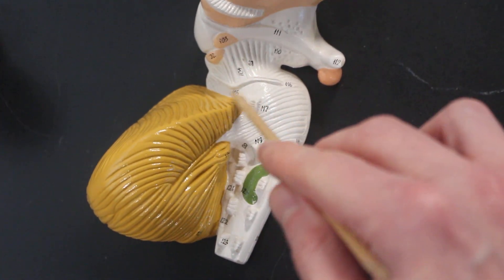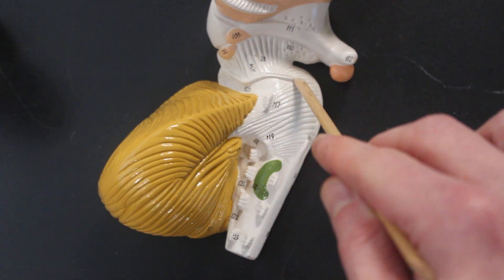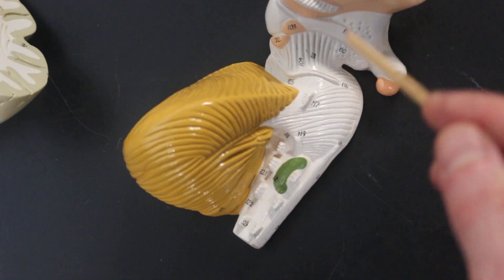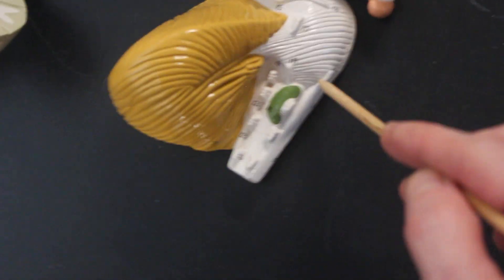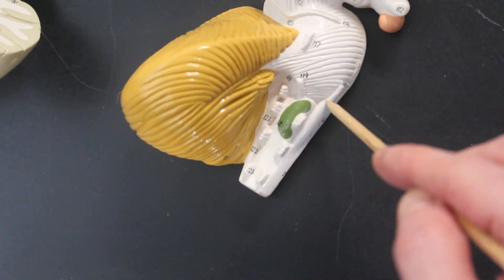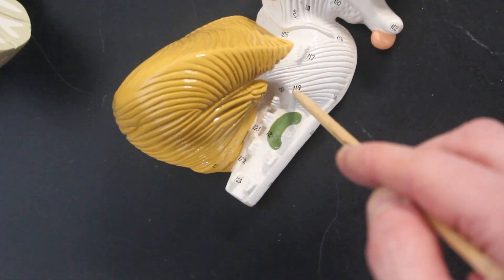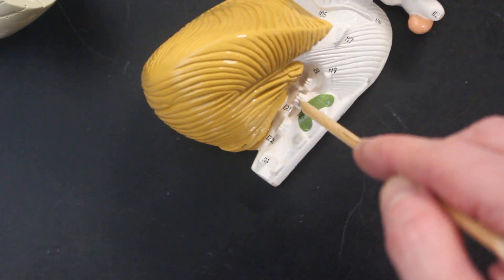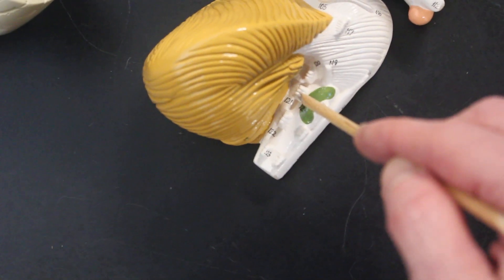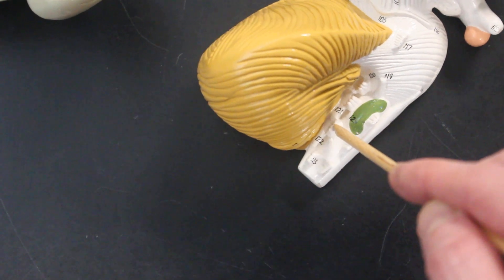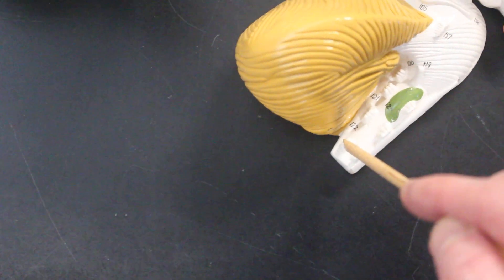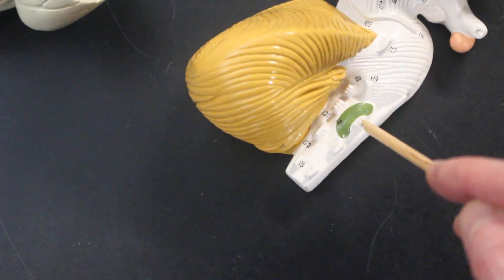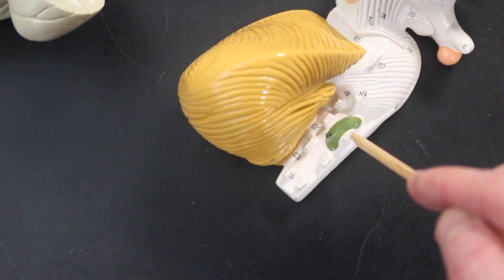From here we have, this is the trochlear nerve right here. This is the trigeminal nerve. Right here is the abducens nerve. The facial nerve. The vestibulocochlear nerve. Below that is the glossopharyngeal nerve. Below that is the vagus nerve. Below that is the accessory nerve. And then over here next to the olive is the hypoglossal nerve.